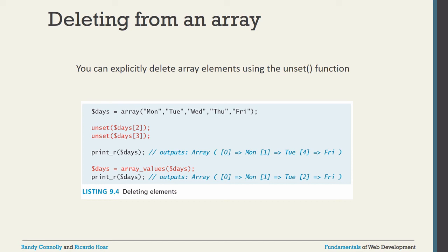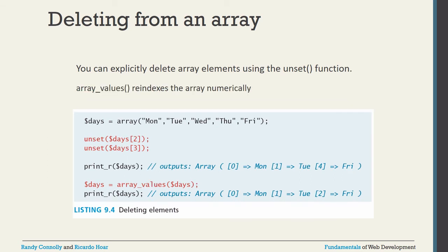The array_values() function re-indexes all elements of an array numerically. After deleting elements — for example, deleting indexes 2 and 3 — the remaining elements will be rearranged with new sequential indexes starting from 0. That is the purpose of using array_values().